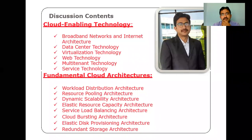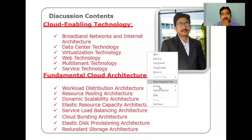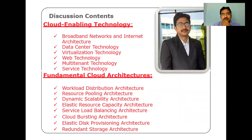Chapter one talks about cloud enabling technology and chapter two talks about fundamental cloud architectures. In the first chapter, we are going to discuss all the different enabling technologies, like broadband networks, internet technology, data center technology, virtualization technology, web technology, multi-tenant technology, and service technology.